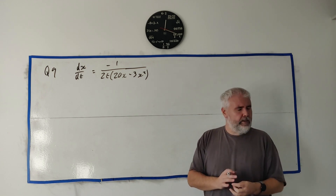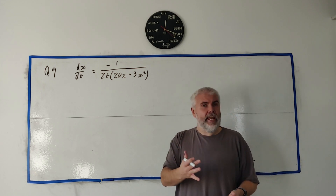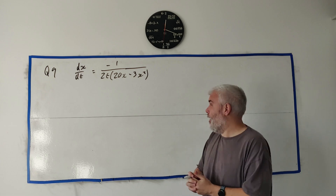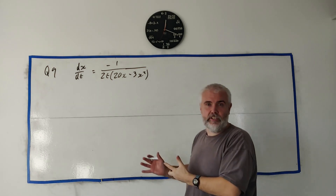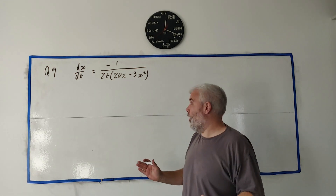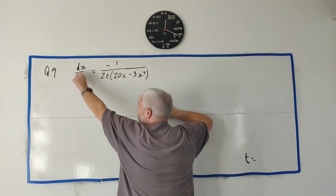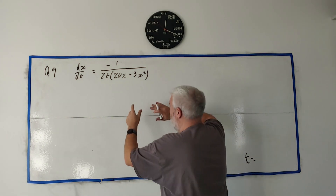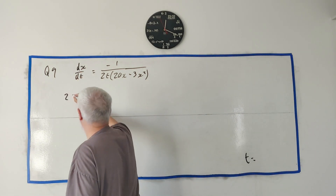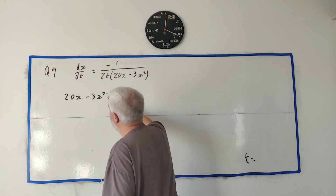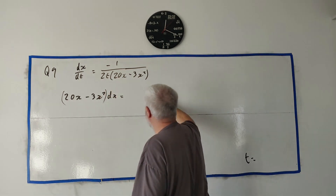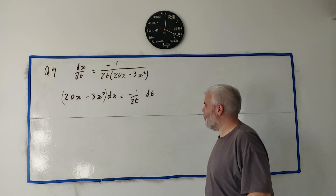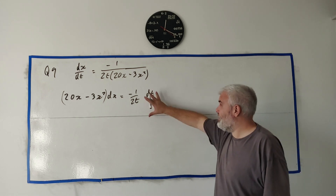Differential equations can be famously difficult to solve, but at A-level we only deal with a simple separable type. We need to get all the x's on one side with dx, and all the t's on the other side with dt. So rearranging: (20x − 3x²) dx = −(1/2) dt/t. You'll likely get a mark just for correctly setting up the separation.